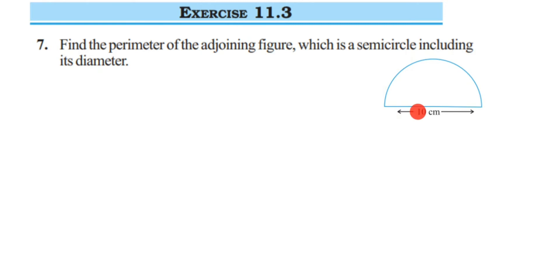The diameter is 10 centimeters. We have to find out the perimeter, means we have to find out this whole length - the circumference of the semicircle and also the diameter. Now since diameter is given, we don't have to do anything. We have to find out only the perimeter of the semicircle.